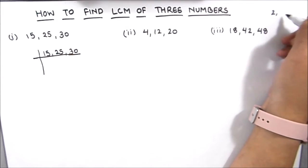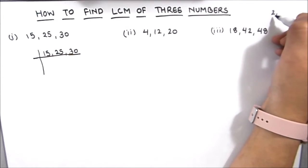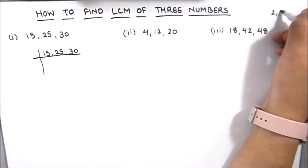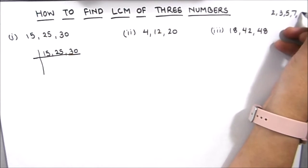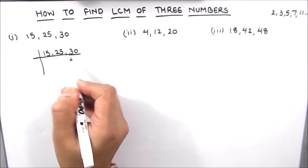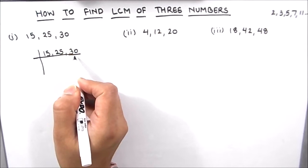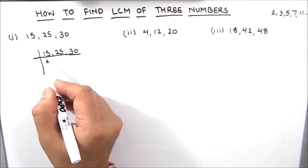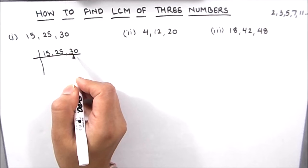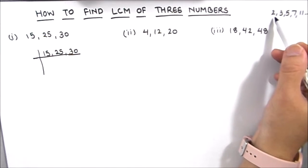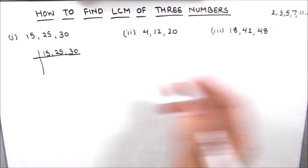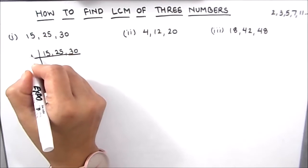The first few prime numbers are 2, 3, 5, 7, 11 and so on. As we have an even number 30 among the three numbers, we are going to use the smallest prime number, which is 2, to divide the numbers.